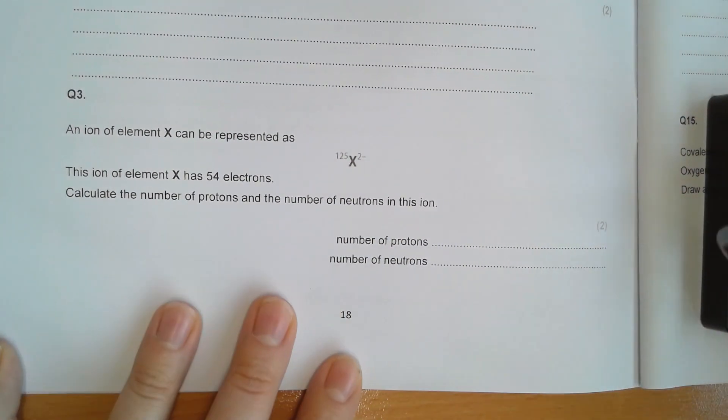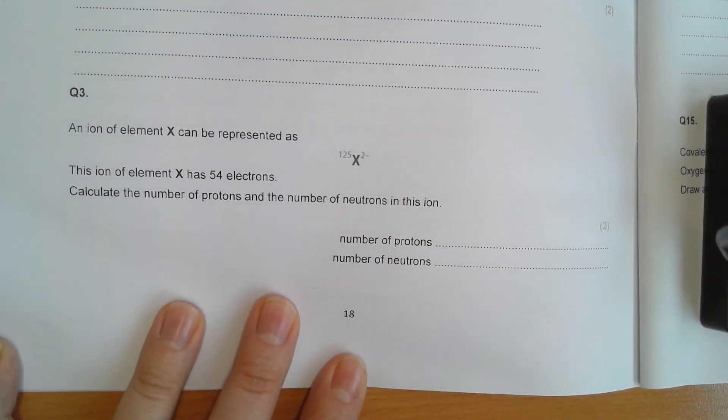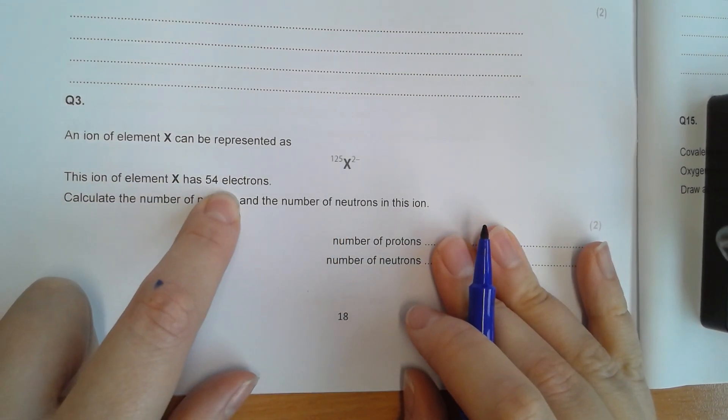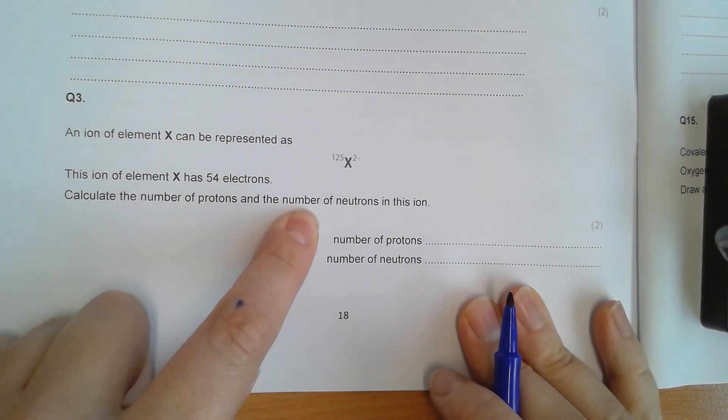So I'll do this one, question three. An ion of element X can be represented as follows. The ion of element X has 54 electrons. They want you to calculate protons and neutrons.